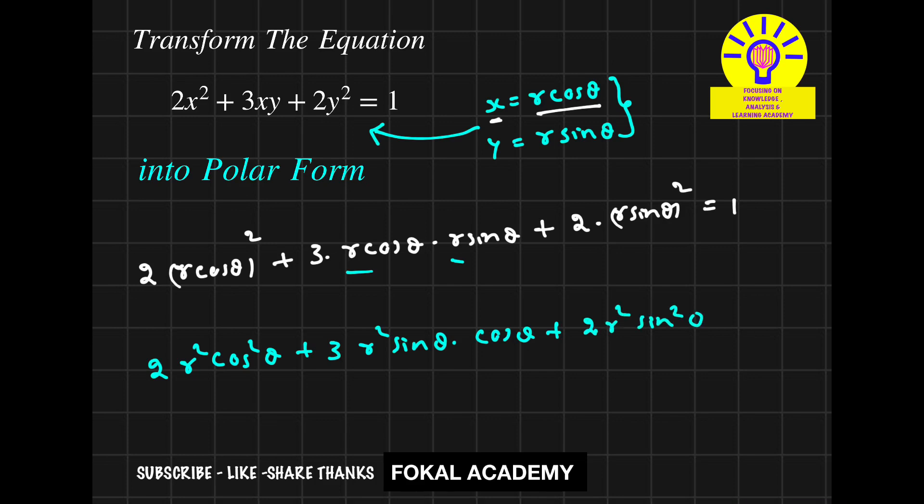Now in LHS, bring r square as common in each term. So the equation becomes r square into 2 cos square θ, 2 sin square θ remains, nothing but 2 into cos square θ plus sin square θ, plus 3 into sin θ into cos θ.